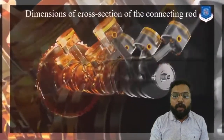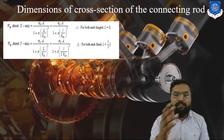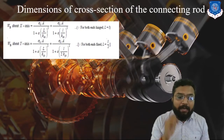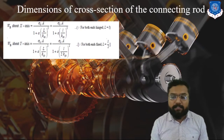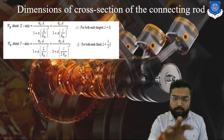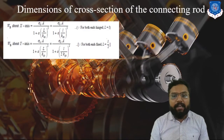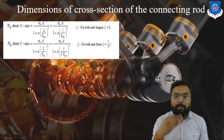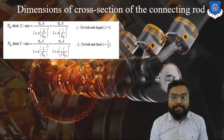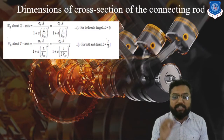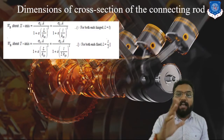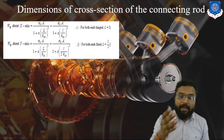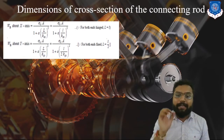Now let's get into the design of the dimensions of the connecting rod. We must find the buckling load at the X axis and the buckling load at the Y axis. At the X axis it corresponds to IXX, and at the Y axis it corresponds to IYY. According to IXX and IYY, we consider KXX and KYY, which are the radii of gyration. Whichever is higher, we will design based on that direction, because the higher the load, the more it will try to buckle in that direction.